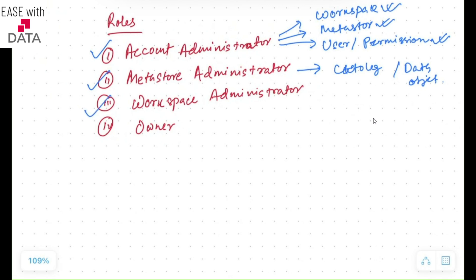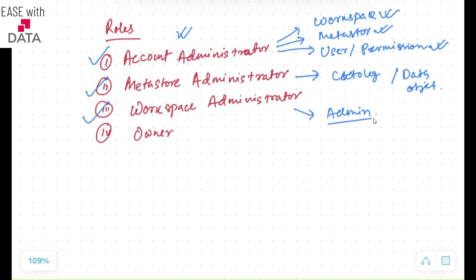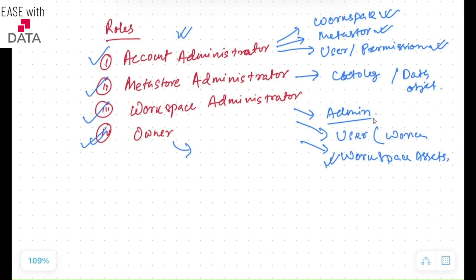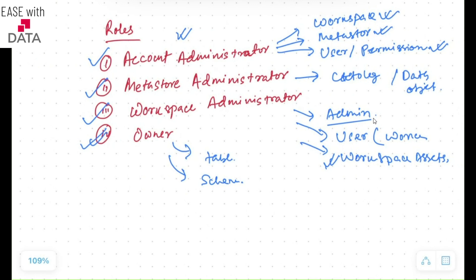The third role is the workspace administrator, who is the admin of a workspace. The account administrator was the admin at the account level; the workspace administrator is the admin at the workspace level. The workspace administrator manages users at the workspace level, manages workspace assets, and decides the privileges for those workspace assets. The final role is the owner — the user who creates an object. For example, if you create a table, you are the owner of that table, and if you create a schema, you are the owner of that schema. You can delegate different permissions to different users. We are going to see all of them live with different examples in the upcoming sessions.